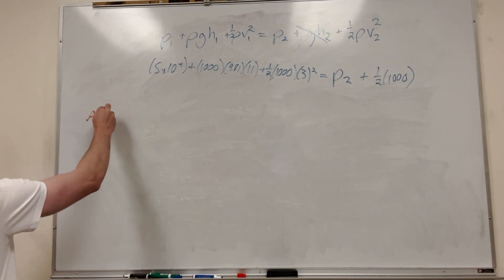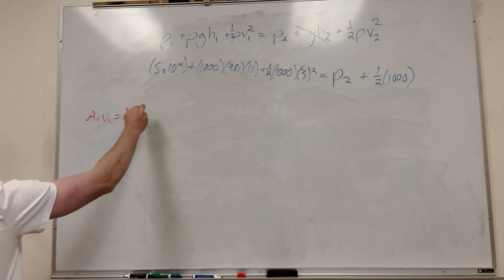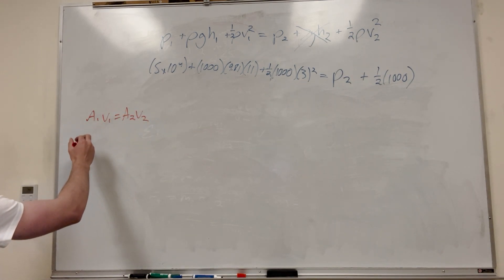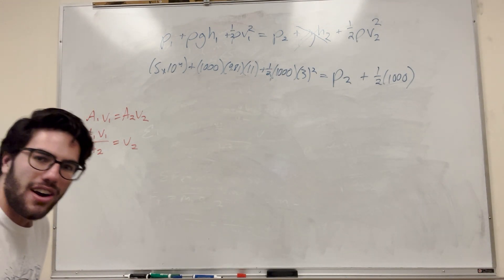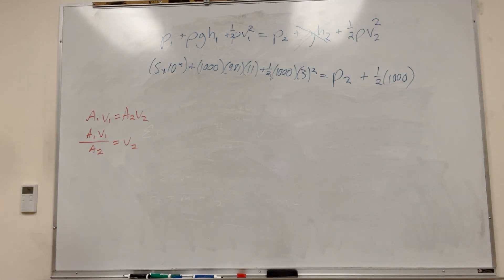It's going to be area of 1 times the velocity of 1 that's equal to area of 2 velocity of 2. We're trying to solve for velocity of 2. So, let's move area of 1 over. Area of 1, velocity of 1 over area of 2 is equal to velocity of 2. We don't have the areas but we can kind of move this into radiuses.